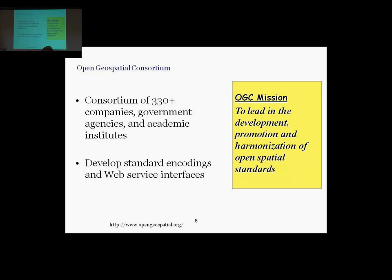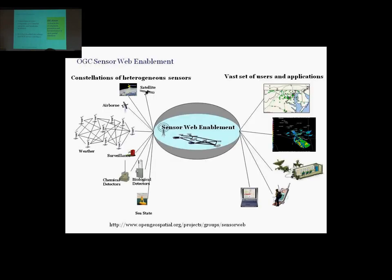It's a huge organization's body. This was taken a while ago, but 330 companies, government agencies, institutions, and they develop these standards for sensor data, sensor observations. And basically it works, the sensor web enablement, this is the name of the project, it works as a middleware between sensor networks and the observations generated and applications that want to use this data. So applications just have to conform to the standards, and they just work the same as the networks.